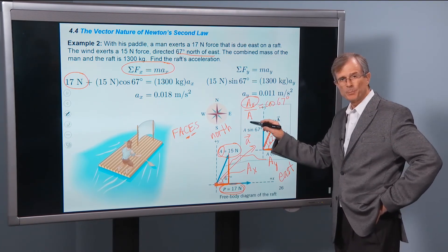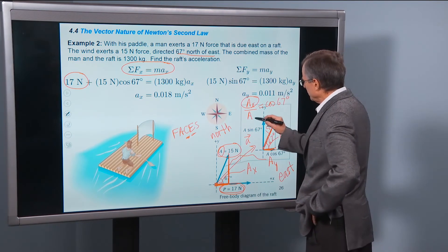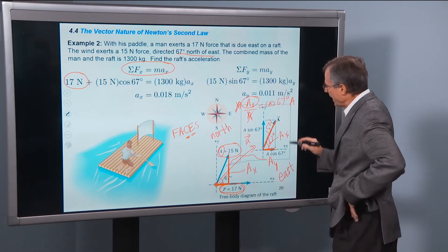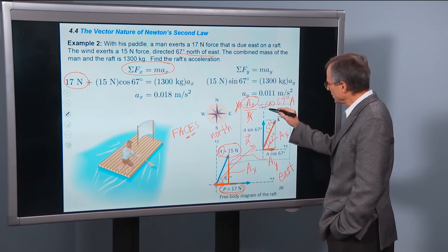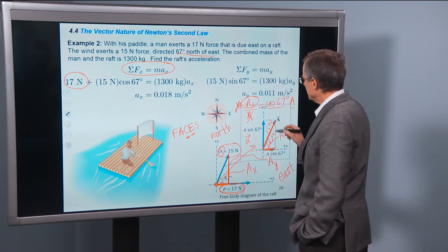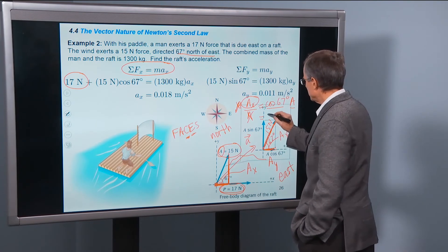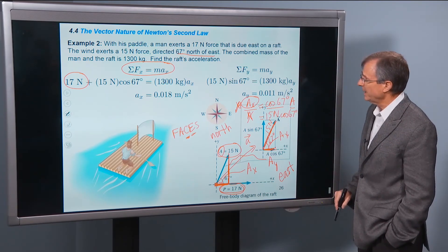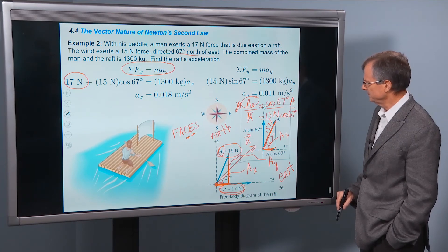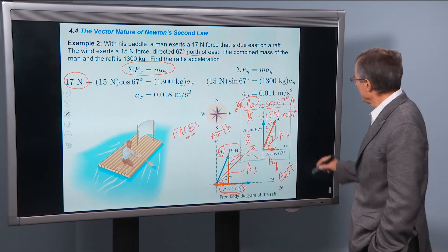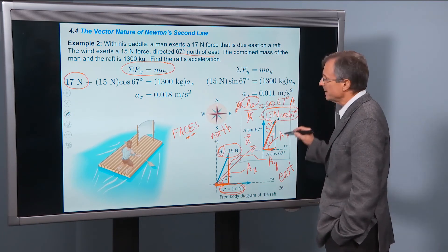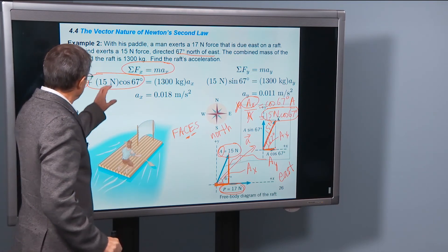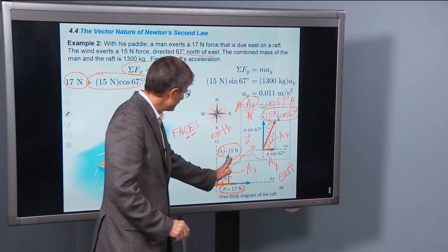So if we want to solve this equation for Ax, we just multiply both sides by A. So multiply this side by A, multiply this side by A, these A's cancel, and we get that Ax is A times cosine of 67 degrees. And so A is 15 newtons. And that's how we find Ax. This 15 newtons times cosine of 67 is exactly what we have right here.